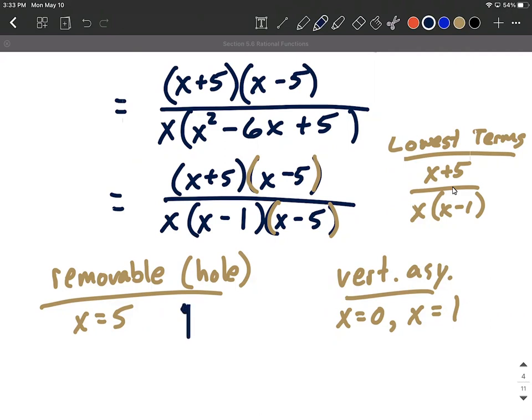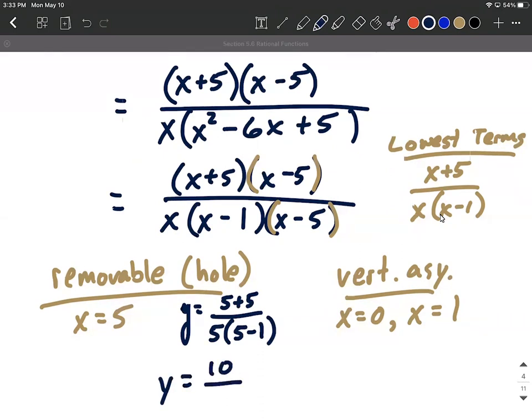So we can say our y value is going to be given by 5 plus 5 over 5 times 5 minus 1. Replace each of these x's in the lowest terms version with 5s. So this will be a y value of 10 over 5 times 4